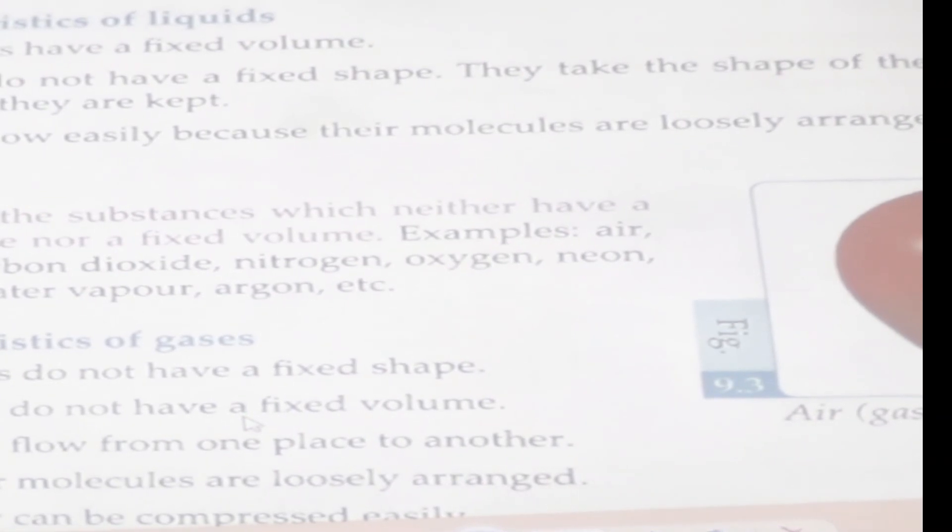Number three: gaseous state. Gases are the substances which neither have a fixed shape nor have a fixed volume. Examples: smoke, air, carbon dioxide, nitrogen, oxygen, neon, helium, water vapor, argon, etc. Characteristics of gas: they do not have a fixed shape; they do not have a fixed volume; they flow from one place to another; their molecules are loosely arranged; and they can be compressed easily.